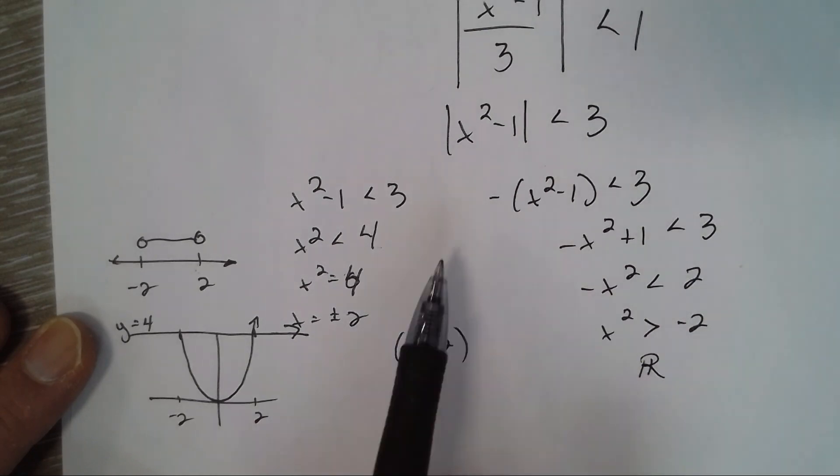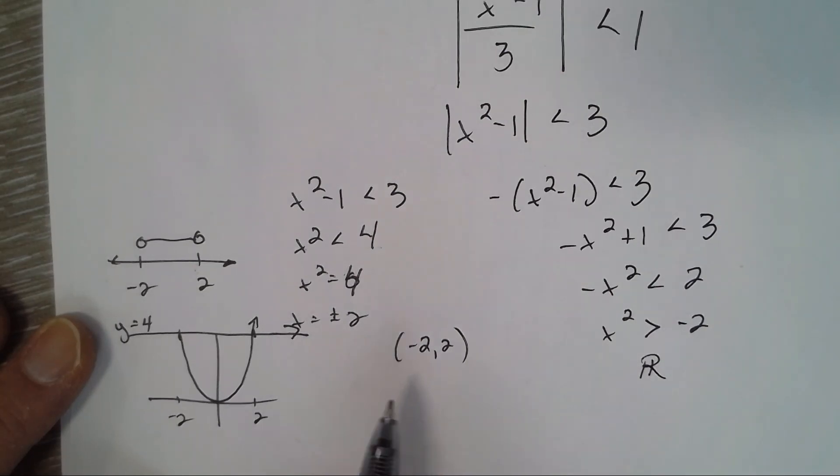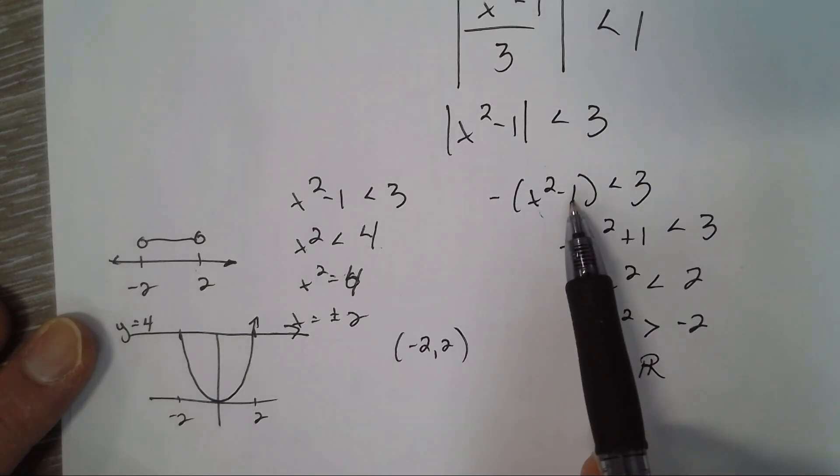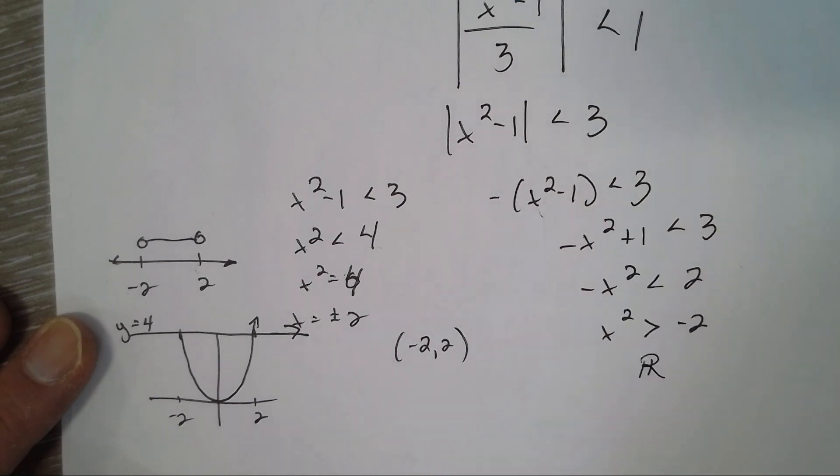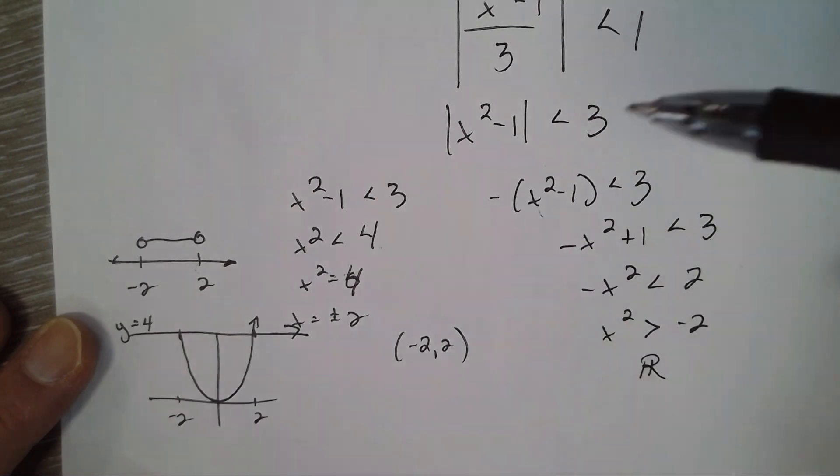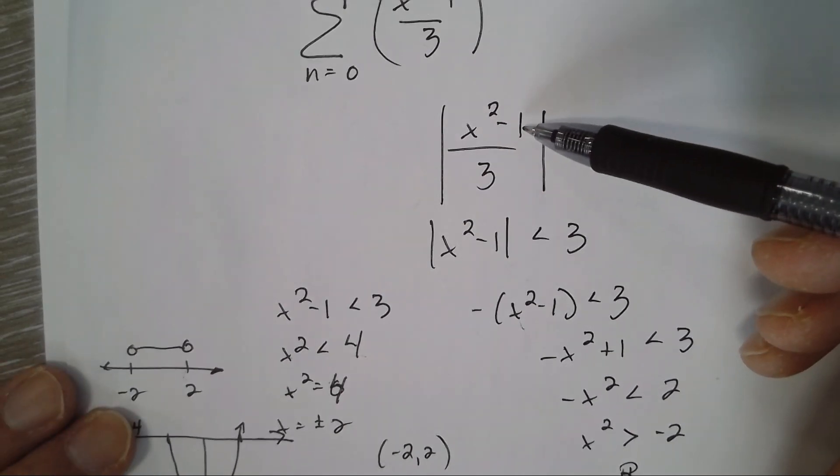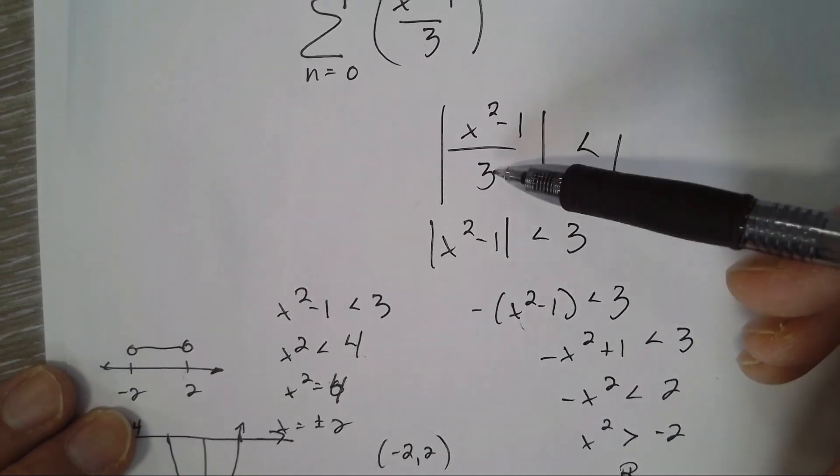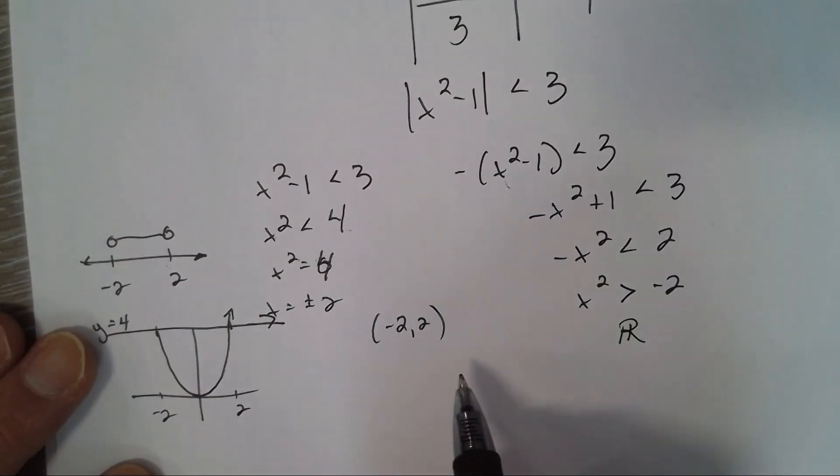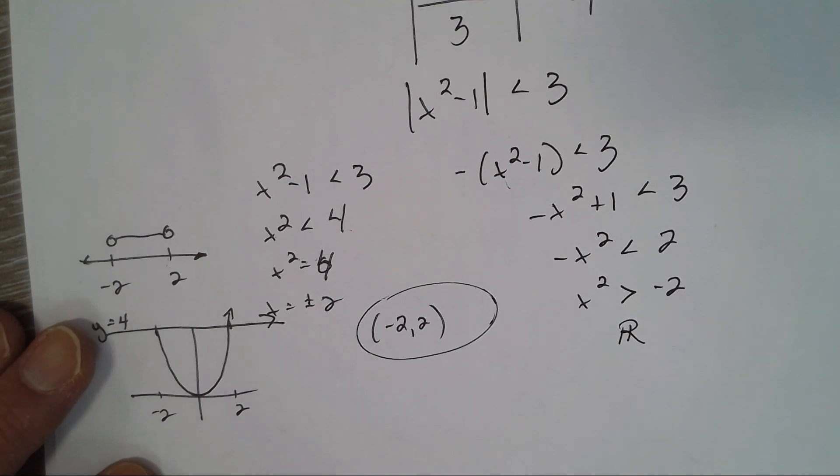So we have to find the intersection of these two. Yeah, five might work here—if I plug it in, 25 minus one is 24, negative 24 is less than three—so anything will work over here. But that's not going to work in this inequality. Five won't work in the original inequality: 25 minus 1 is 24, over 3 is 8, 8 is not less than 1. So it's the intersection of negative 2 to 2 and all real numbers, which means it's just negative 2 to 2—has to make both of them true.